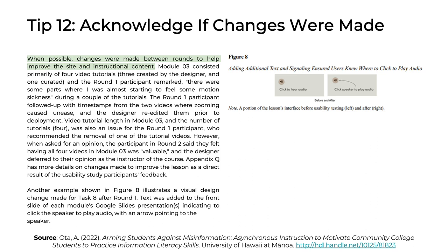Tip 12: Acknowledge if changes were made. After conducting a usability test, it is expected that you're going to revise your instructional product. So your narrative should acknowledge if and when changes were made. This can be done with a simple sentence such as: 'When possible, changes were made between rounds to help improve the site and instructional content.' Of course, if you read more of this paragraph, the author provides more detail about the specific changes made. The point is the importance of acknowledging and describing any revisions made to your instructional product between rounds of usability testing.